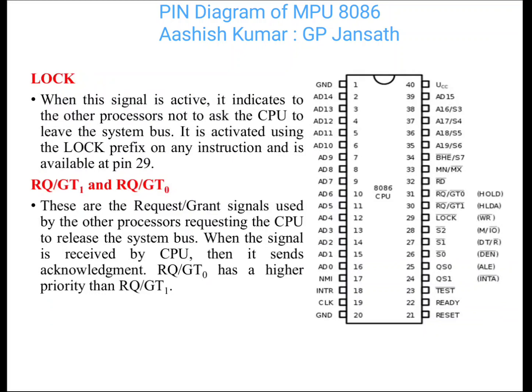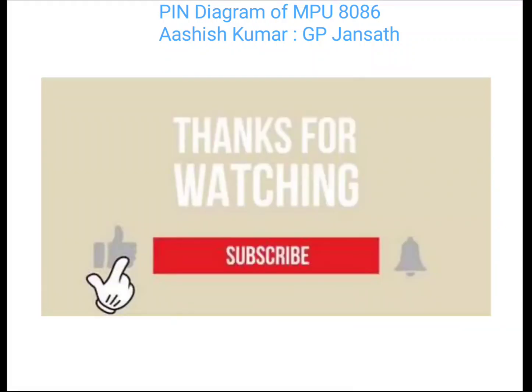LOCK signal: When this signal is active, it indicates to other processors not to ask the CPU to leave the system bus. When it is activated, it provides a signal to other processors working with the 8086 to not obtain the system bus. It is activated using a LOCK prefix on any instruction and is available at pin number 29.